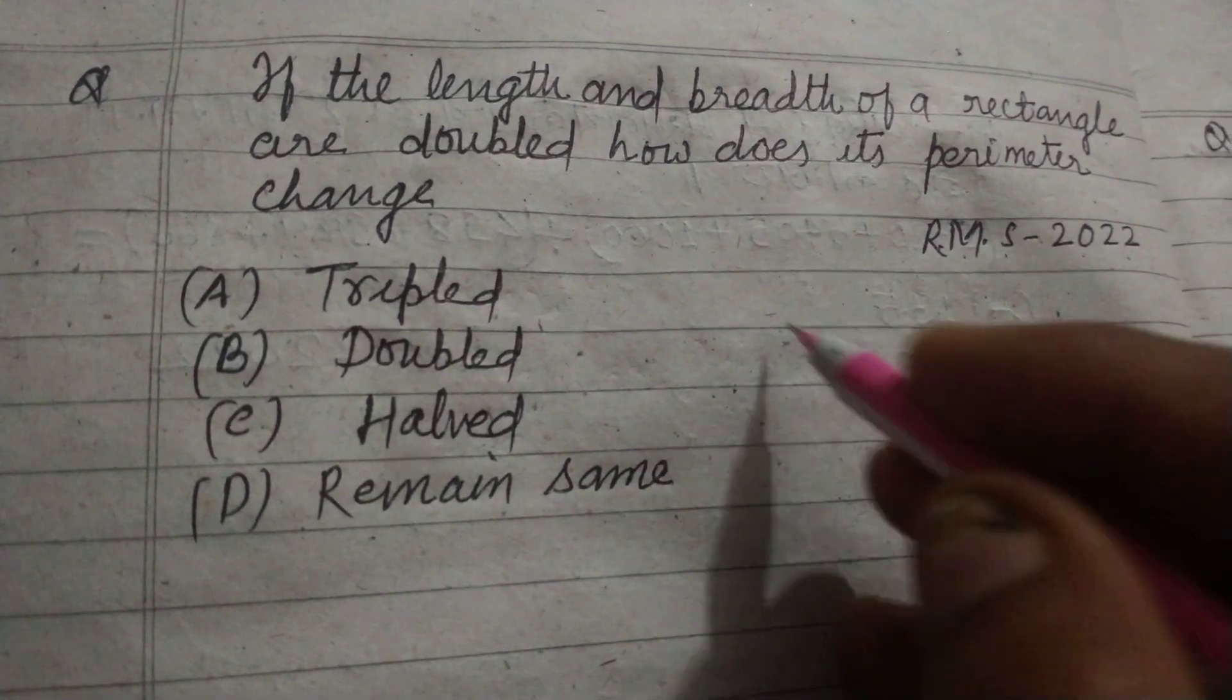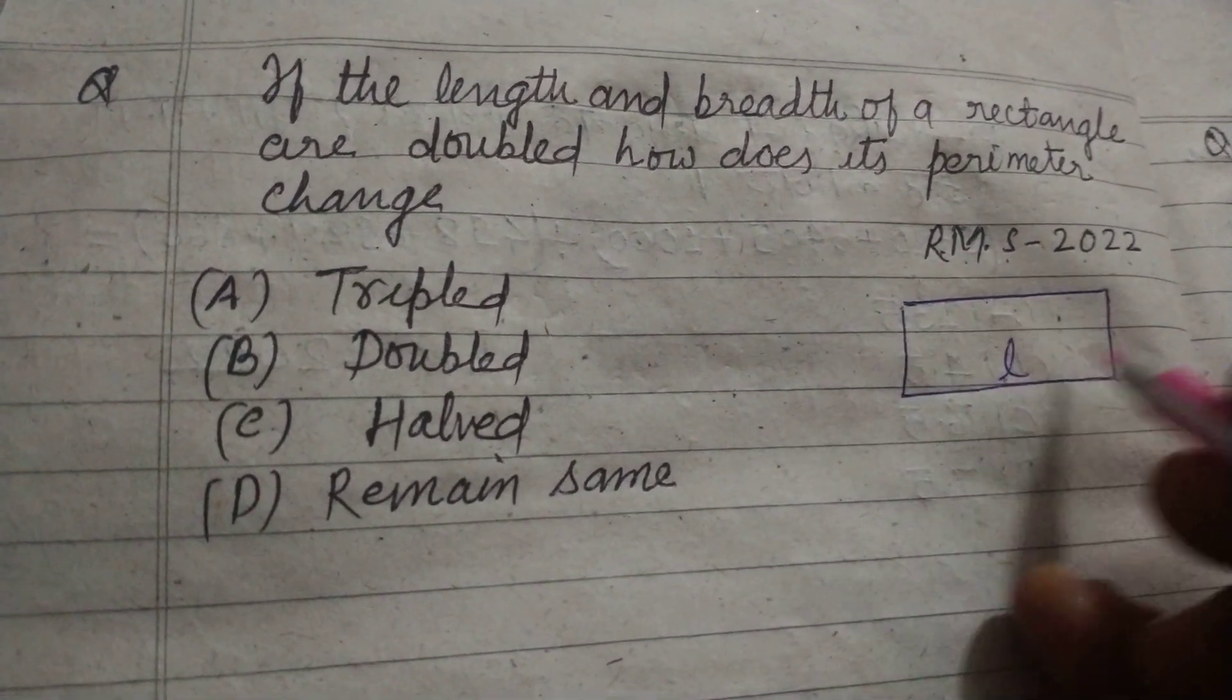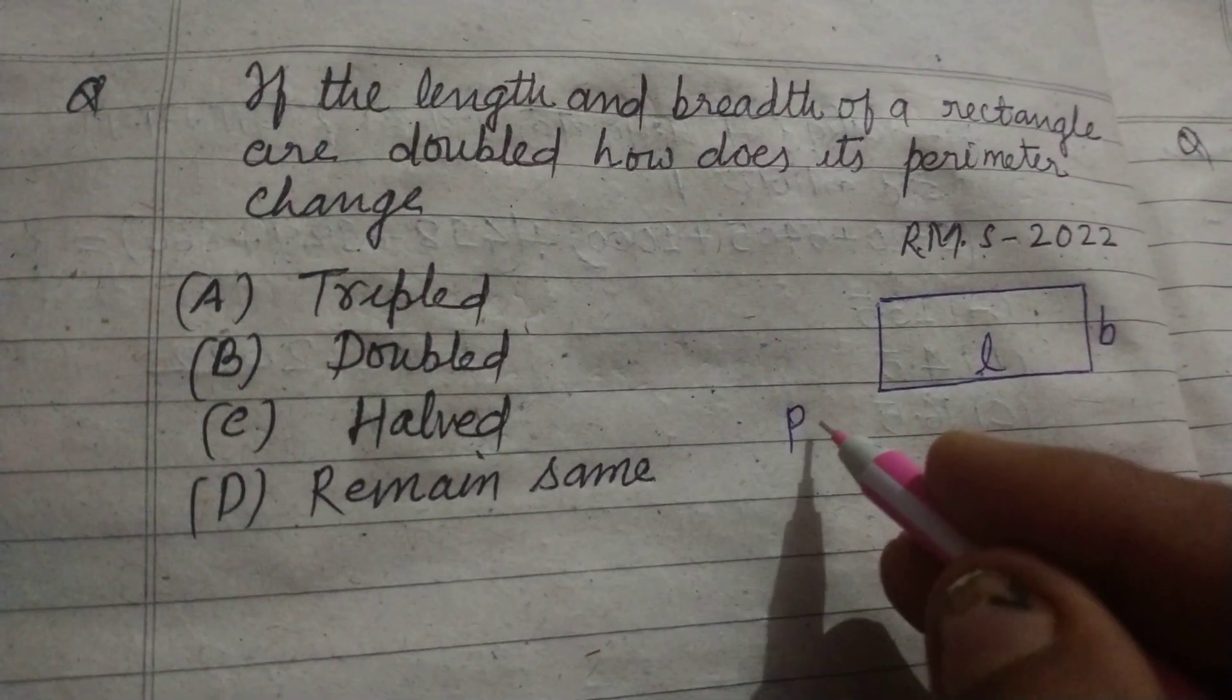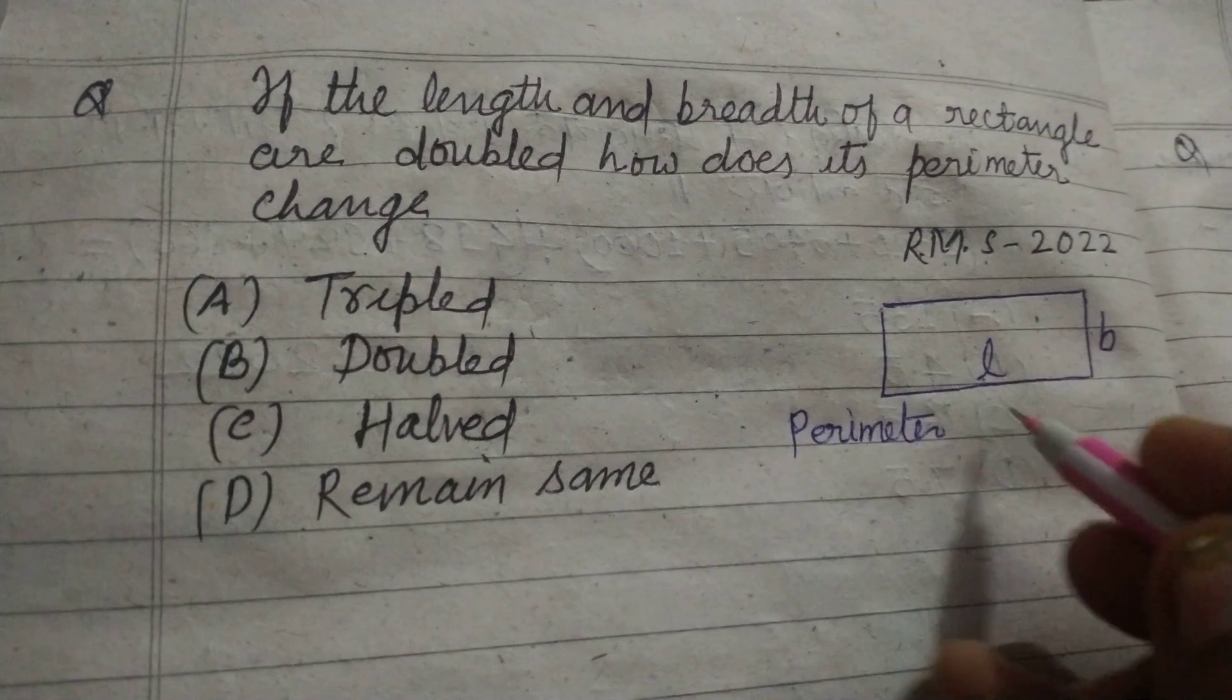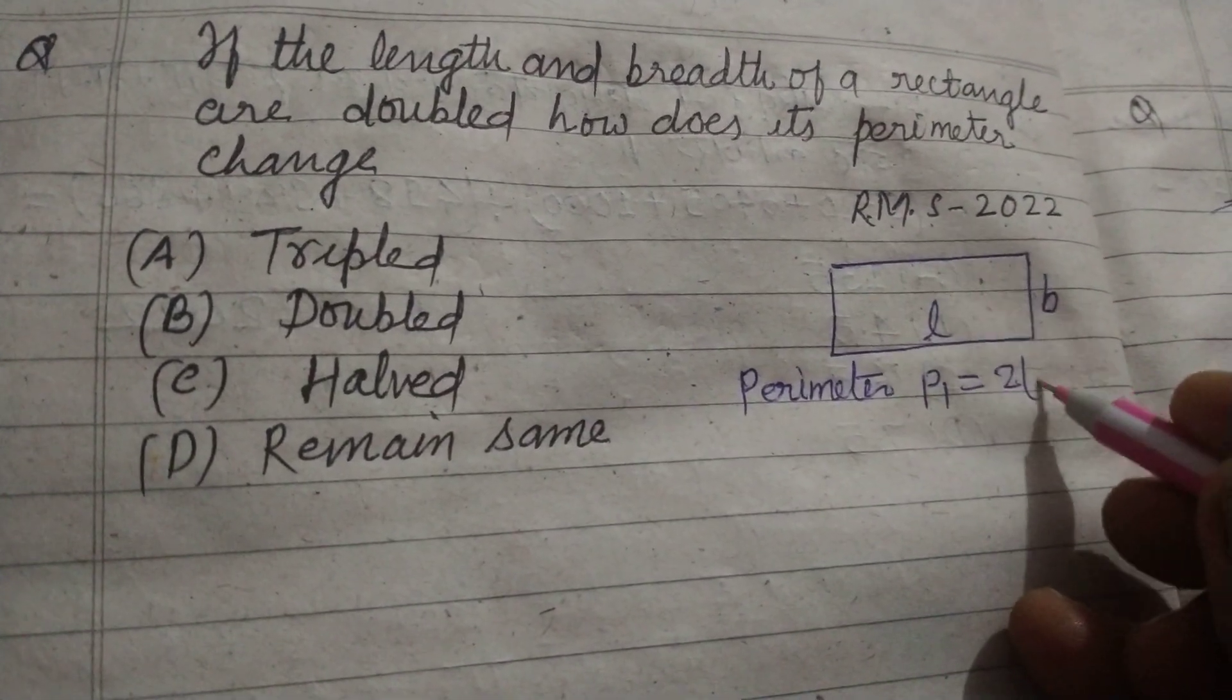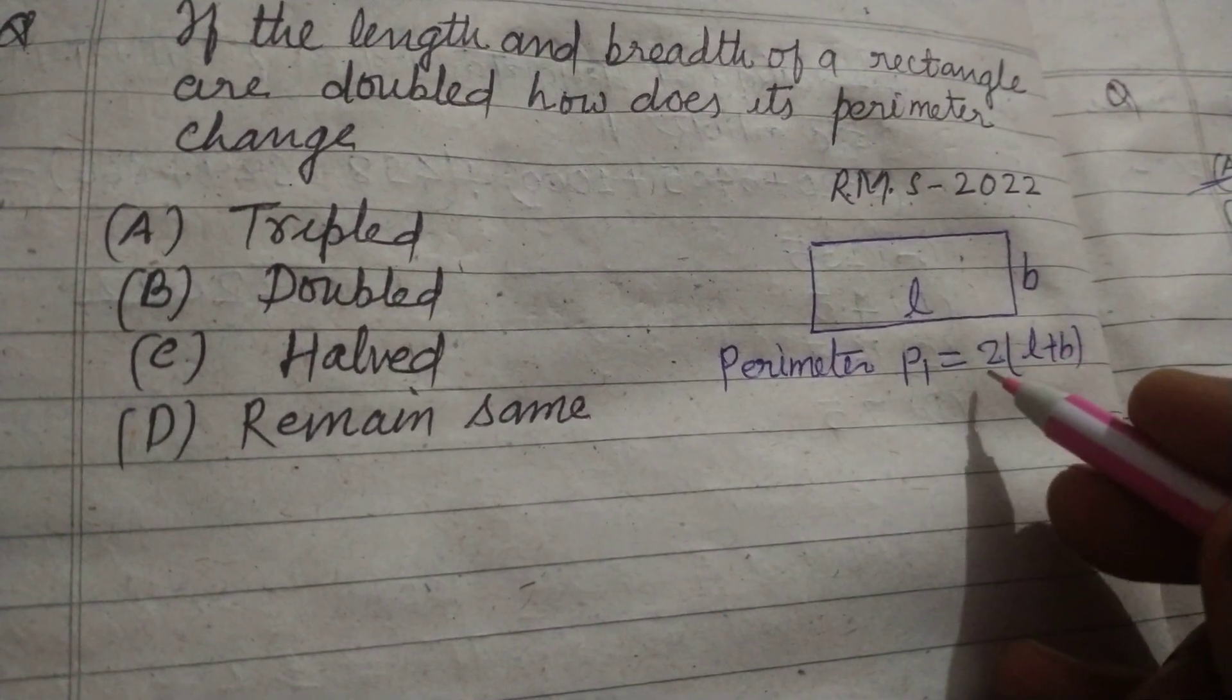So let this be a rectangle with length L and breadth B. So its perimeter is P1 in this case, so this will be 2 times L plus B. This is the formula of the perimeter of a rectangle.